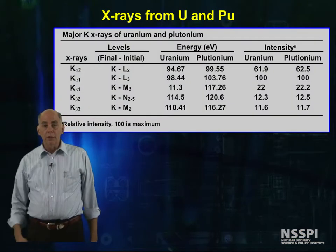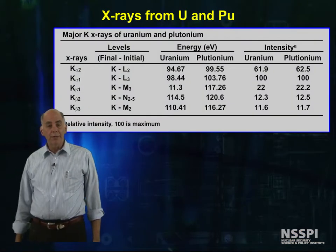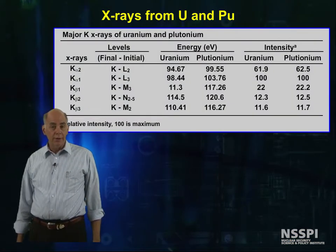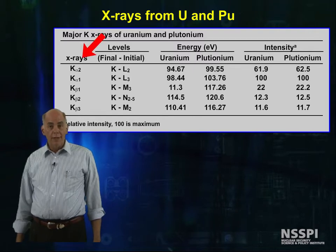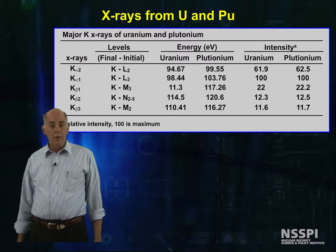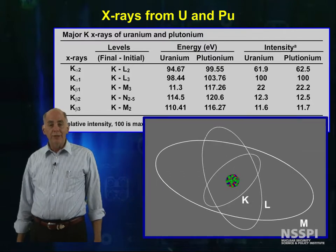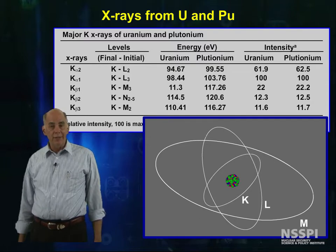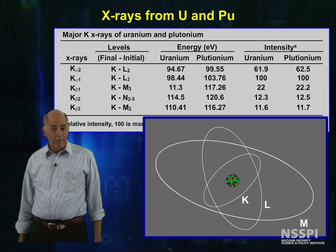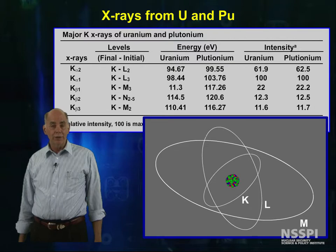The table here lists the characteristic X-rays of both plutonium and uranium. As you can see, there are more than one possible X-rays. These different energy X-rays come from the difference in the potential energy between the innermost electron orbit, the K-shell, and the initial position of the electron in the outer shells before it drops to the K-shell.